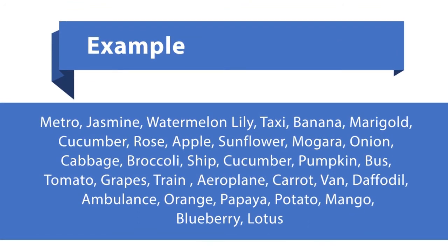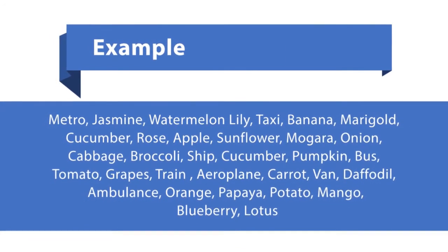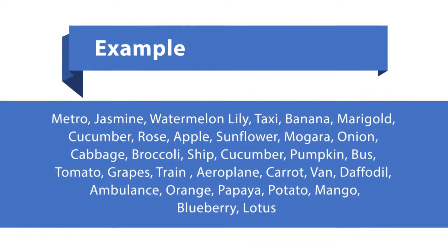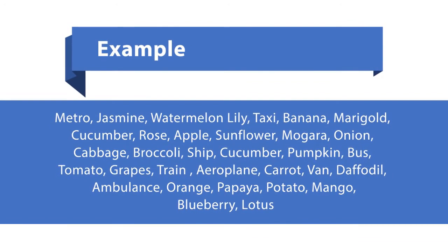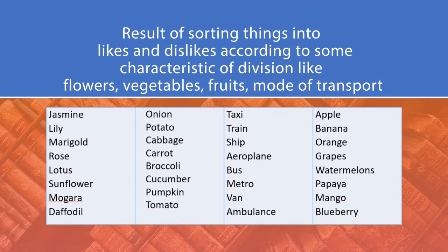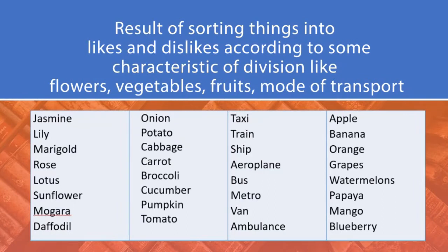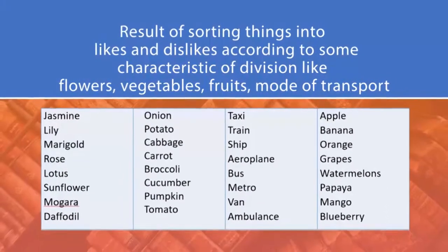However, you can bring these items in some order by sorting them according to the characteristics which are common to these items. So, we can separate things into different groups. You can see how the things can be classified. The order in this example is the result of sorting things into likes and dislikes according to some characteristics of division. Likes: flowers, vegetables, fruits, mode of transport. So, these examples, if you arrange these items in a group, then it looks like this.